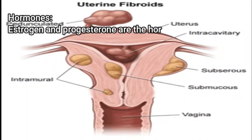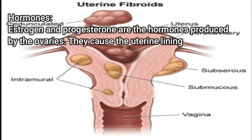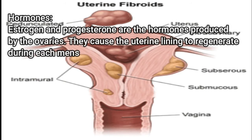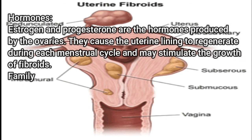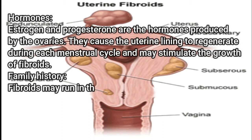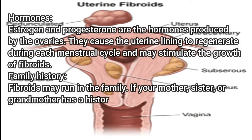Hormones: estrogen and progesterone are the hormones produced by the ovaries. They cause the uterine lining to regenerate during each menstrual cycle and may stimulate the growth of fibroids. Family history: fibroids may run in the family.